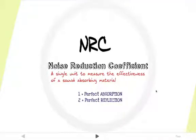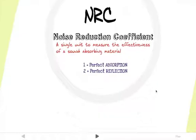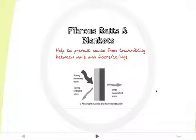It is the tiny frictional drag of air moving between the fibers of fibrous materials that actually makes them effective sound barriers. The fibers themselves do not actually absorb any sound energy. The amount of absorption depends on the material's thickness, density, porosity, and resistance to airflow. For effective absorption, air paths must extend from one side of the material to the other.